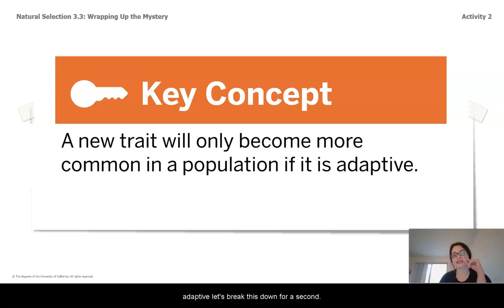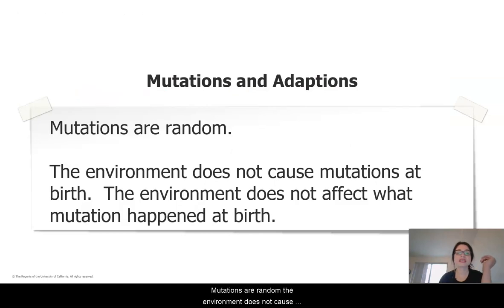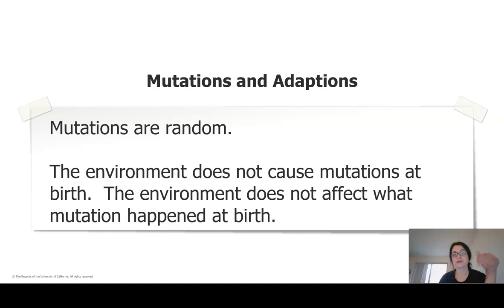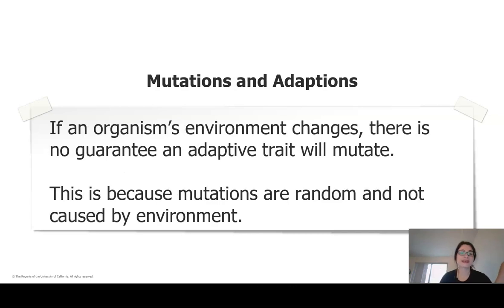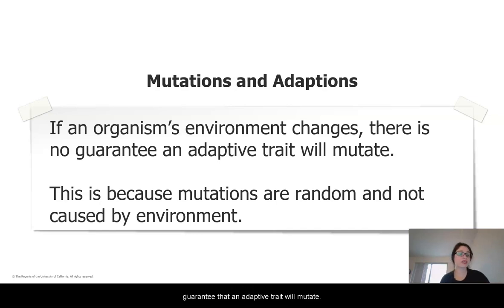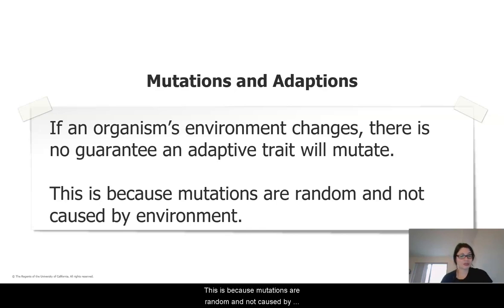Let's break this down for a second. Mutations are random. The environment does not cause mutations at birth, and does not affect what mutations happen at birth. If a mutation causes a new trait, the organism's environment will determine if the new trait is adaptive or not. If the organism's environment changes, there's no guarantee that an adaptive trait will mutate — because mutations are random and not caused by the environment.